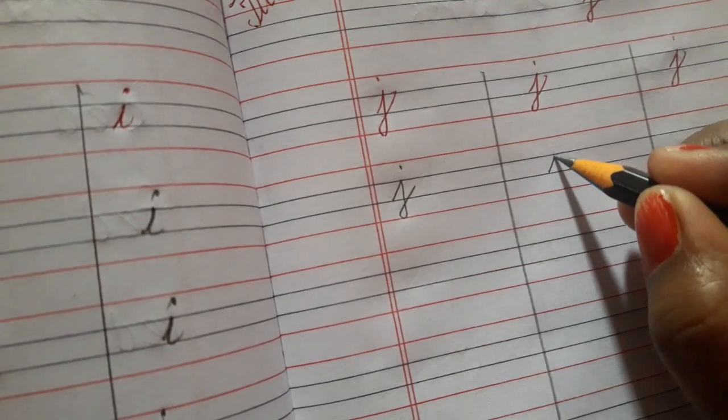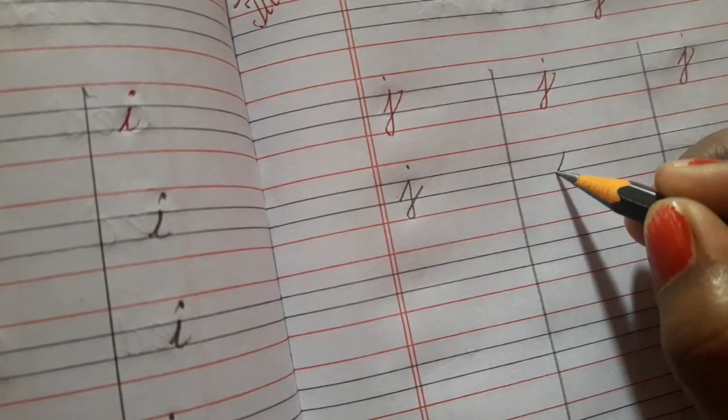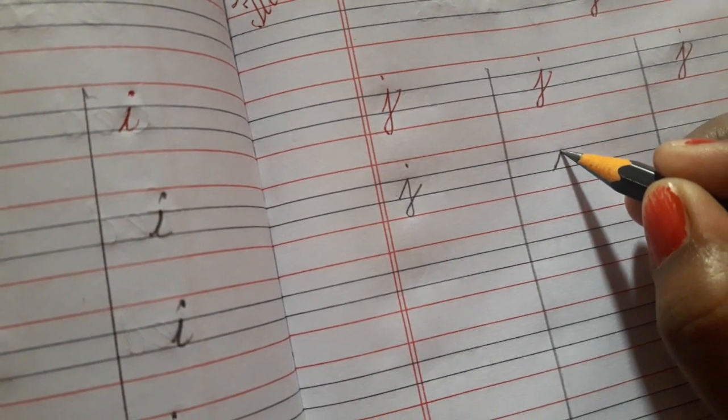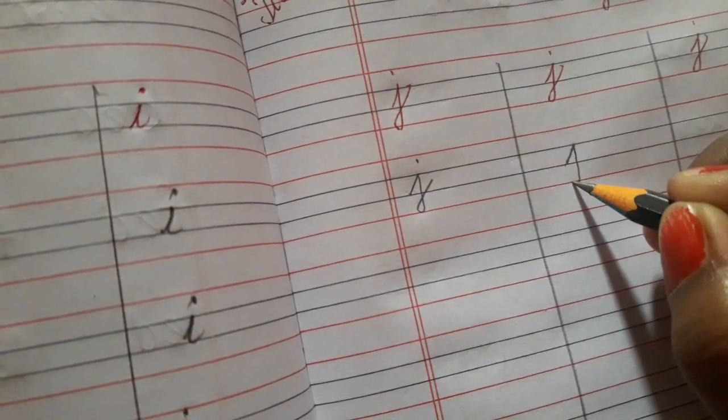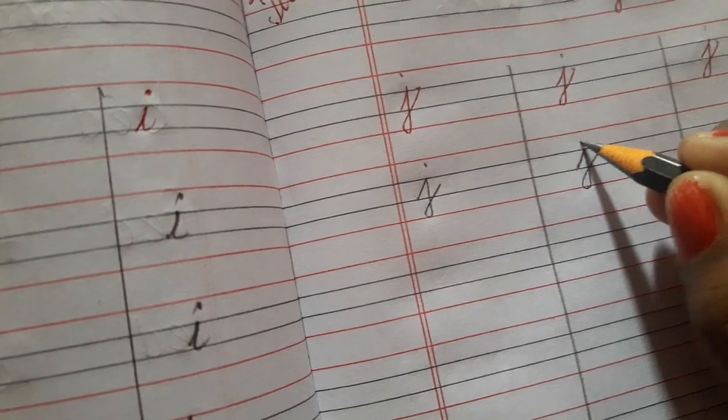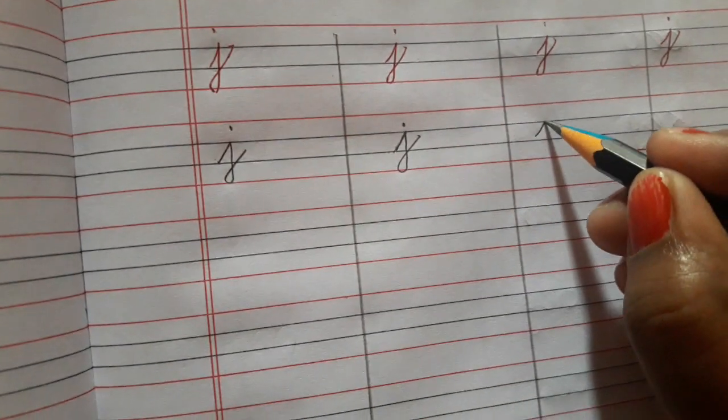Once again. One slanting line. Come down standing line. Make curve. And dot. J. Like this.